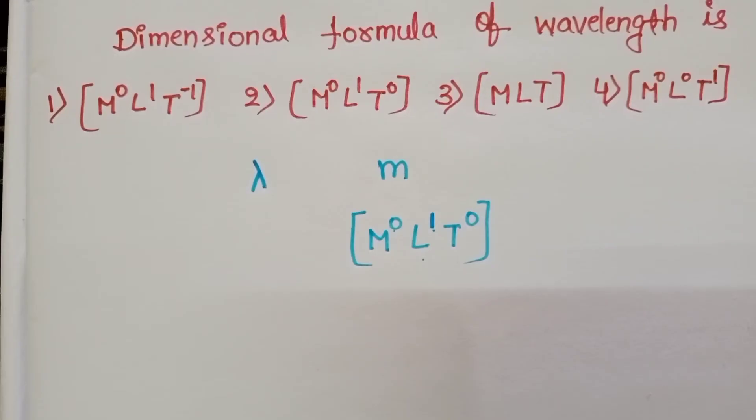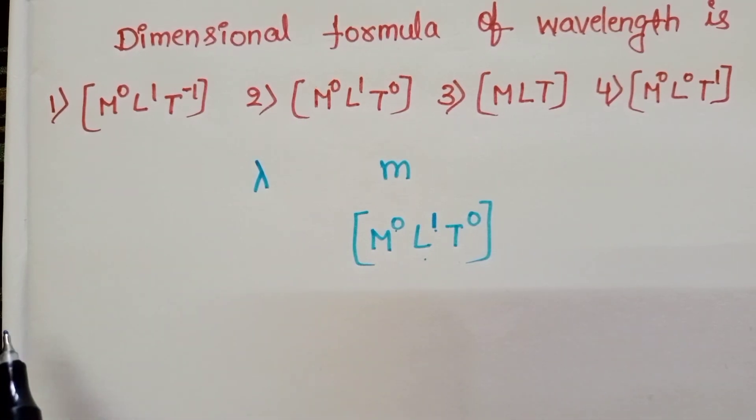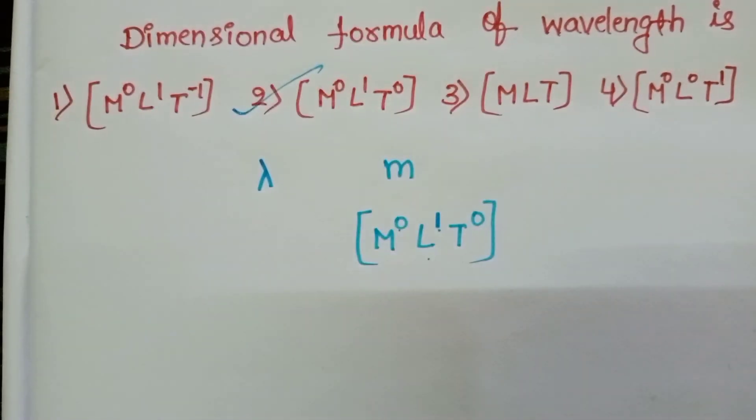Similarly, distance, displacement, perimeter, circumference, and light year all have the same dimensional formula. So, the correct option is second option: M power 0 L power 1 T power 0.